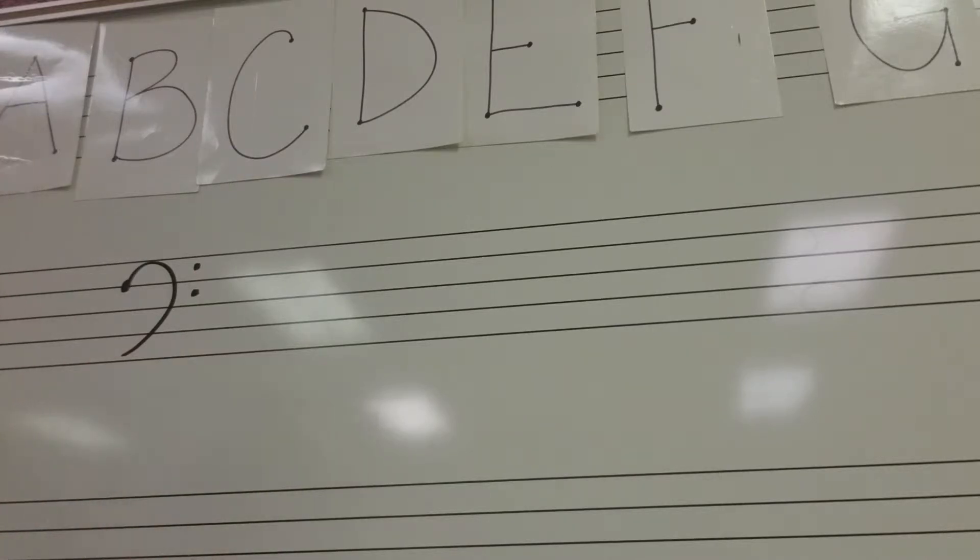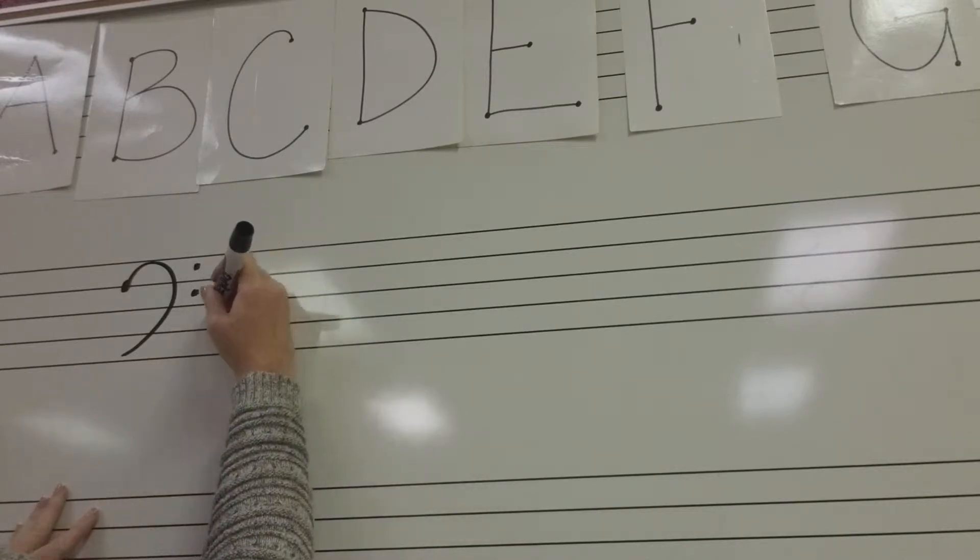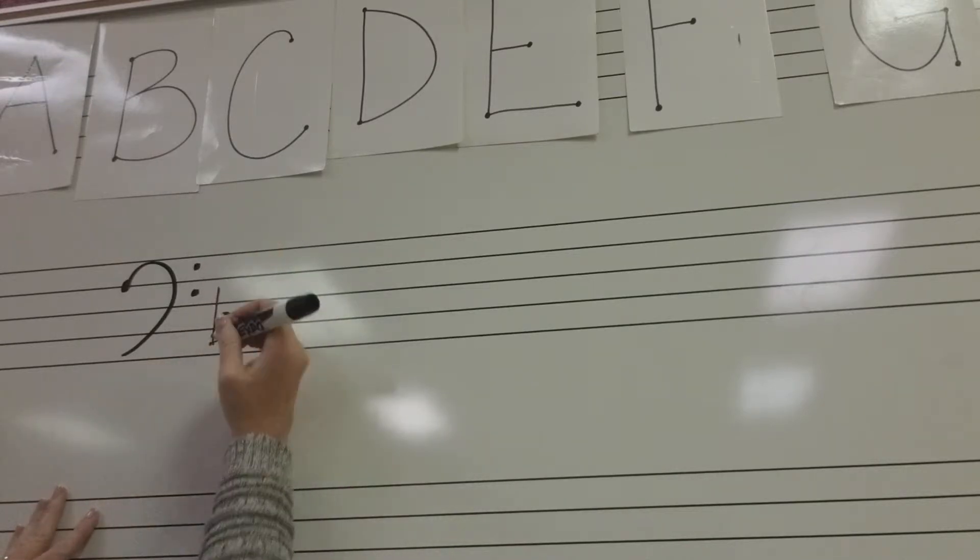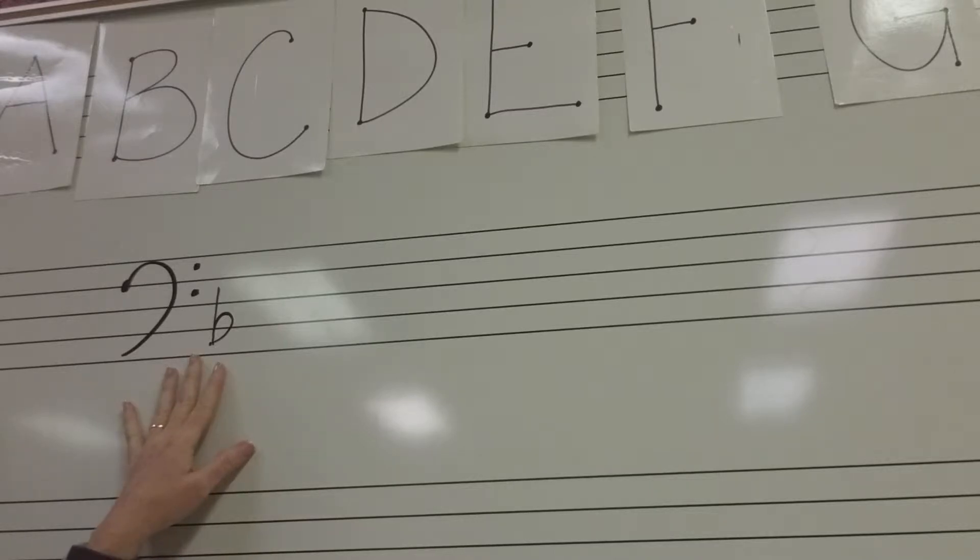So next thing we're going to do, we're going to go on the second line. Now we're going to draw a flat. And this is our B line. So this tells you that all of your B's are flat no matter where they are in the staff.